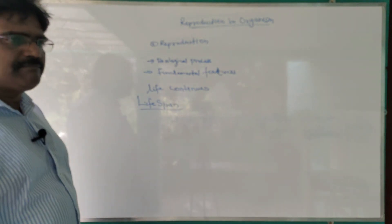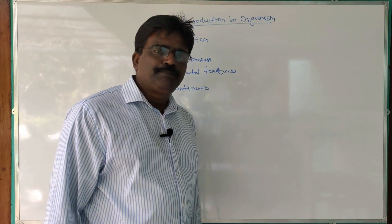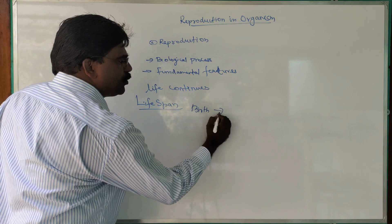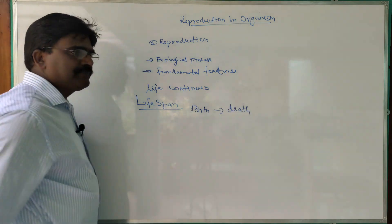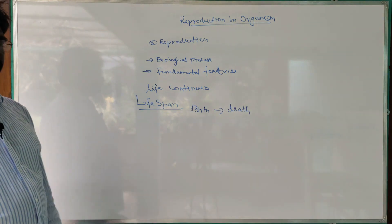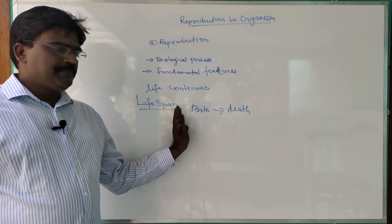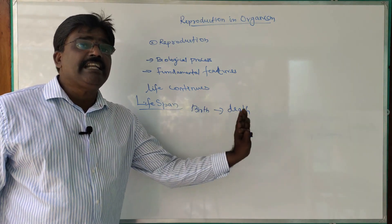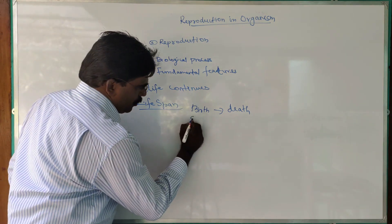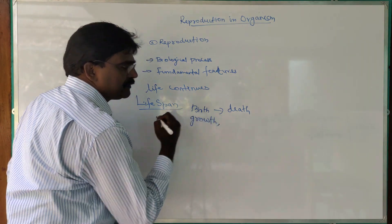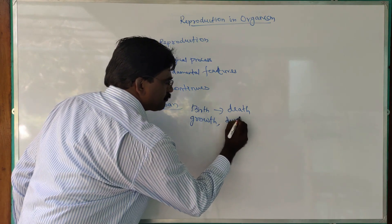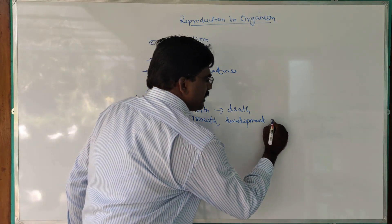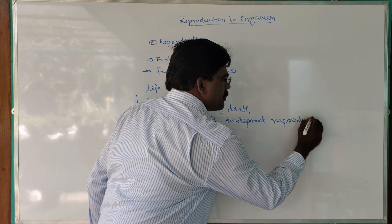What is life span? Life span is the period between birth to death. All living organisms from birth to death come across various events like growth, development, and then reproduction.